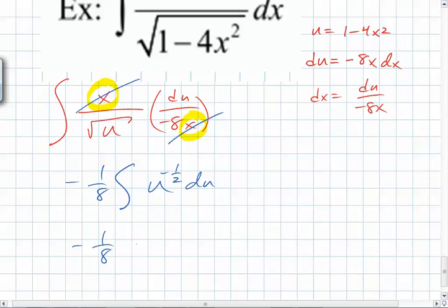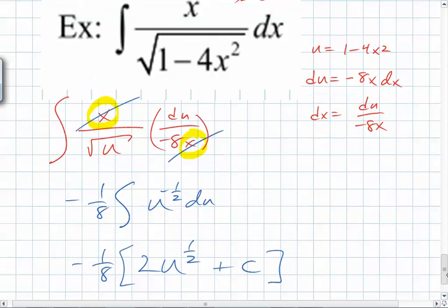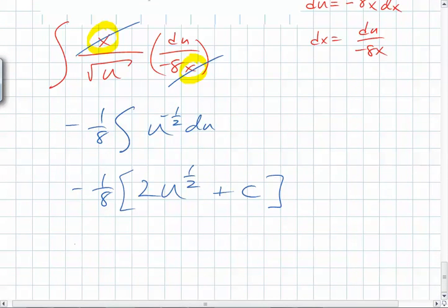What power is u going to be raised to? To the 1 half, but what do we need to park out front now? 2 plus c. What is u equal to? 1 minus 4x squared. So what do you end up with? Negative 1 eighth times 2, 1 minus 4x squared to the 1 half.